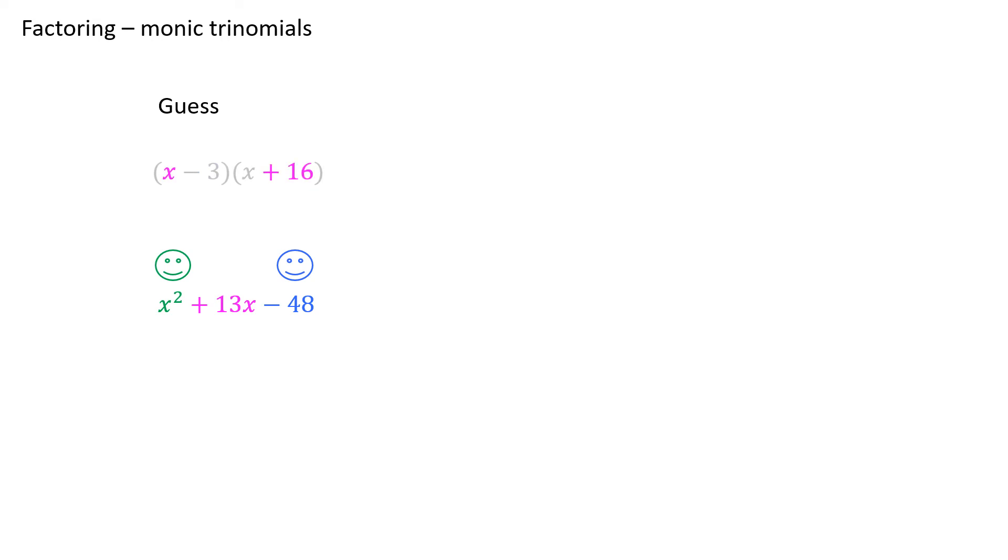We'll start with the outer. x times 16 is 16x. Inner product, negative 3 times x. And now the question is, once again, do these terms combine to make 13x? And in fact, they do. So by luck and a little hard work, we managed to find two binomials that would multiply to give us the desired result.